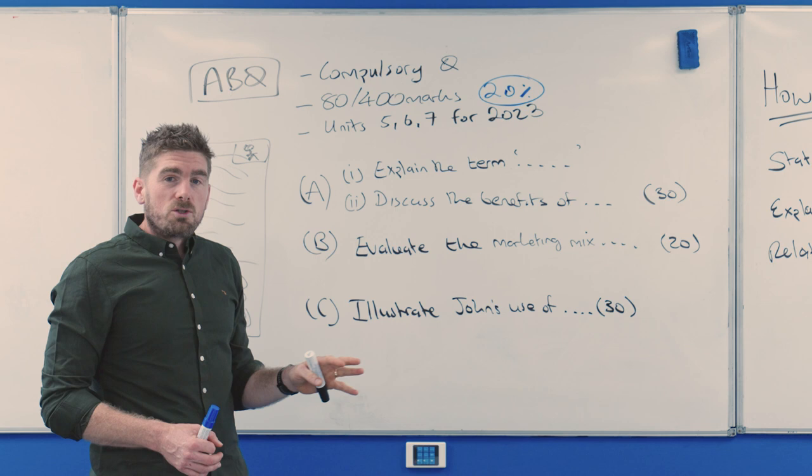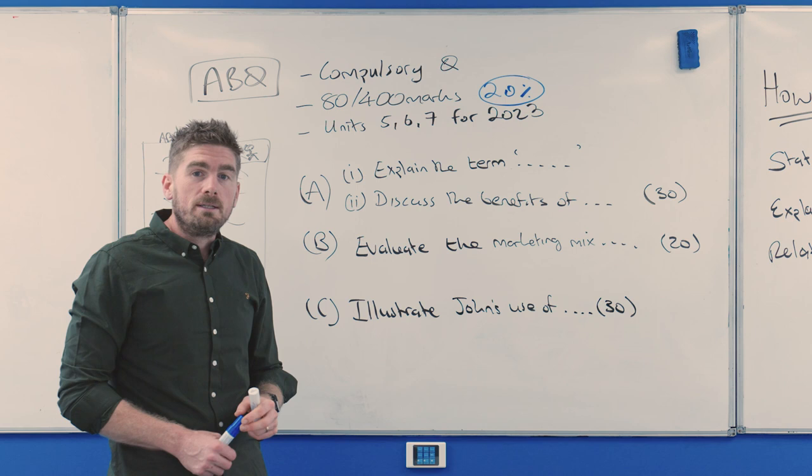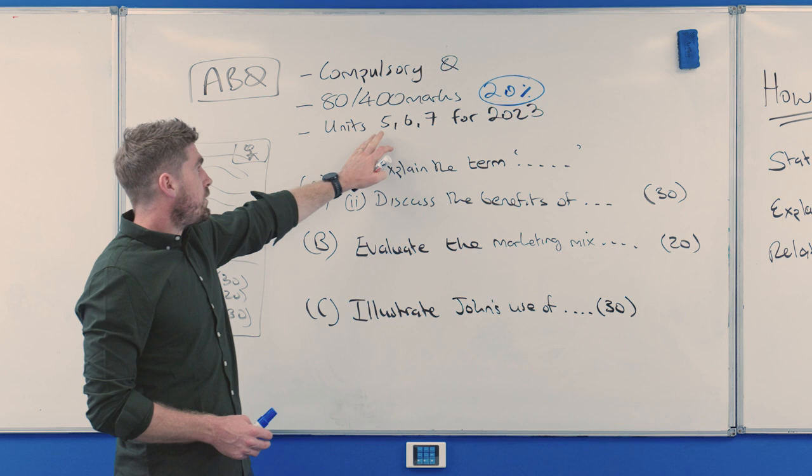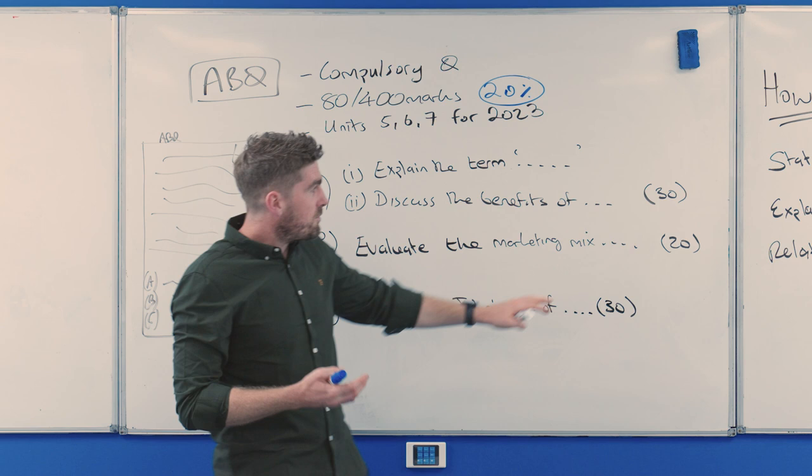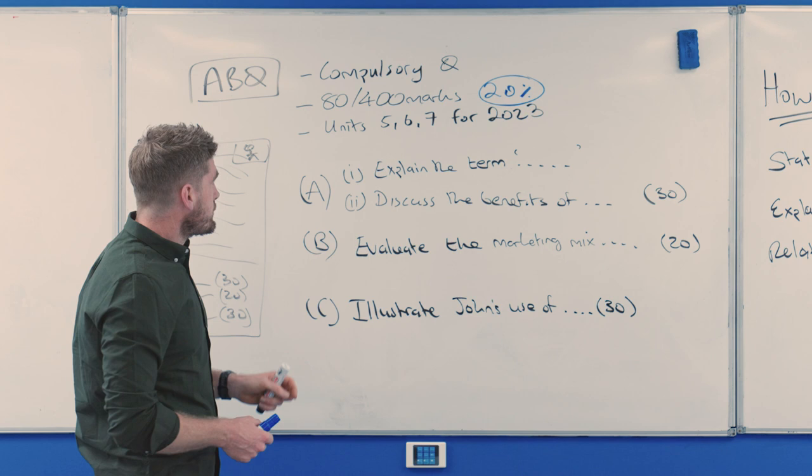With the Applied Business question, it's worth 20% of your paper and you have to do it. You don't get a choice. Each year for the seven units, three of the units will be on the ABQ. So for the 2023 paper, it's five, six and seven. For the 2024 paper, it's units one, two and three. It's worth 80 marks. There's always three units on it and then there's always three parts. So for the ABQ, you'll have an A, a B and a C. Each part of one question will come from each unit making up the 80. It tends to be something like maybe 30 marks for one, 20 marks for the other, 30 for the other or 30, 25, 25. So it's around the same amount of marks for each unit each year for the ABQ.